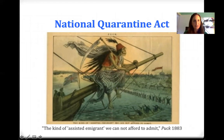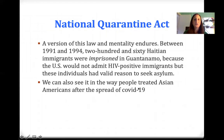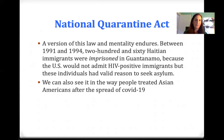A version of this law and mentality endured: between 1991 and 1994, 260 Haitian immigrants were imprisoned in Guantanamo because the U.S. would not admit HIV-positive immigrants, but these individuals had valid reasons to seek asylum. They were in a legal middle ground — we couldn't send them back because they had reason to seek asylum, but we couldn't let them in because of quarantine laws. We can also see the effects of these laws in the way people treated Asian Americans after the spread of COVID-19.